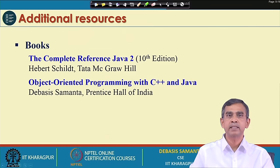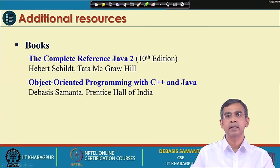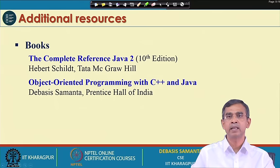This course needs a few reference materials. There is a very good book on programming with Java — the title is called Complete Reference Java 2, and as of today the 10th edition is available, published by Tata McGraw Hill Indian edition. In addition to this, there is another book published from Prentice Hall of India written by me: Object Oriented Programming with C++ and Java. The second book is very useful for beginners because it is written in a very simple and easy way so that you can understand as quickly as possible.